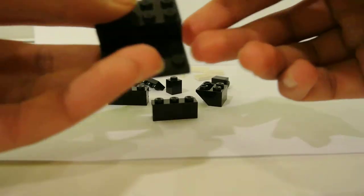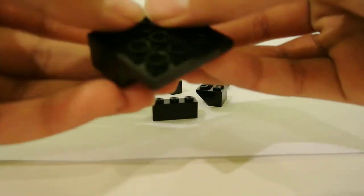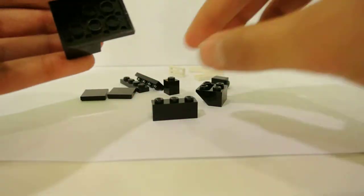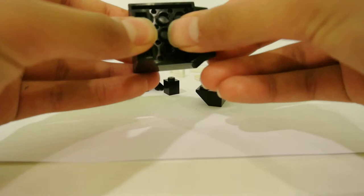Then flip it over so it's flat on the bottom and take your 1x3 bricks and put them on the bottom like that.